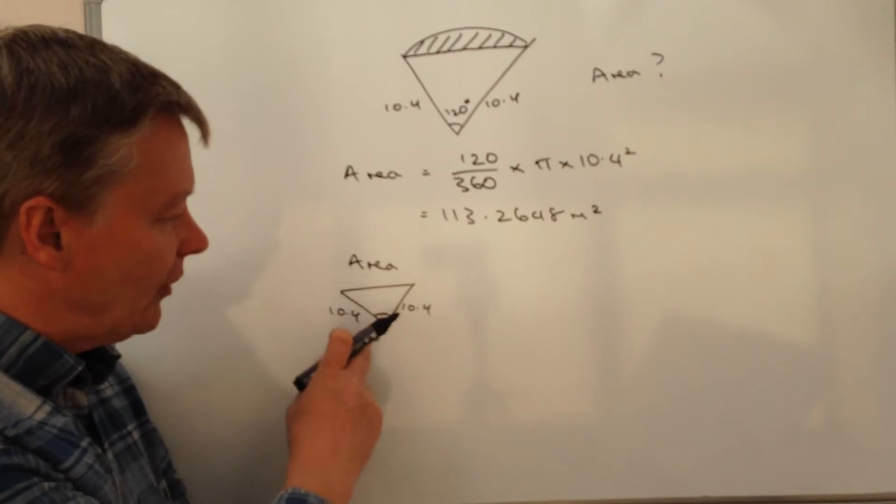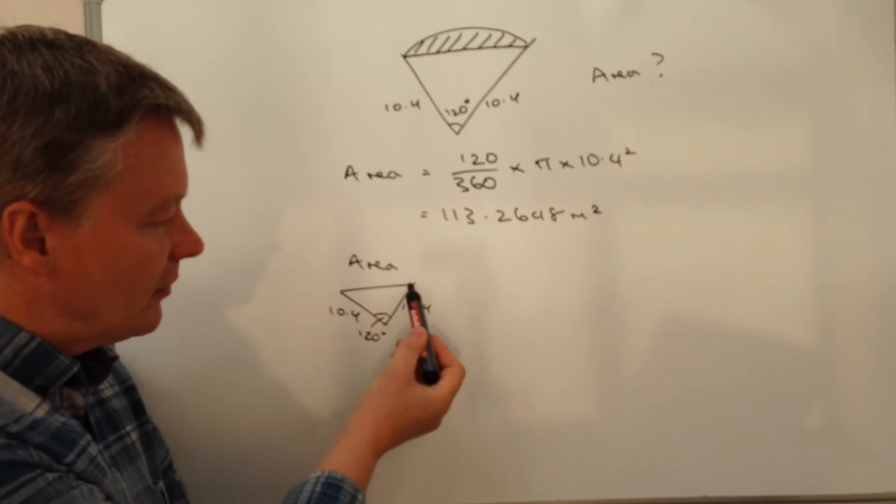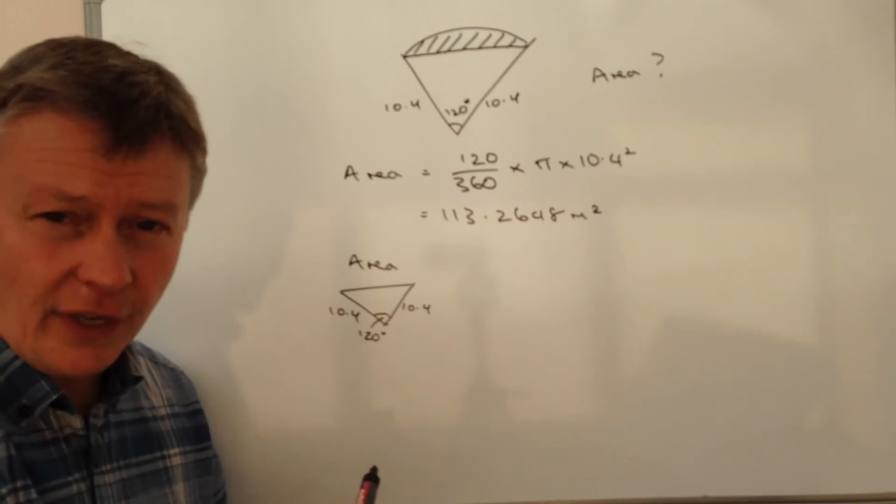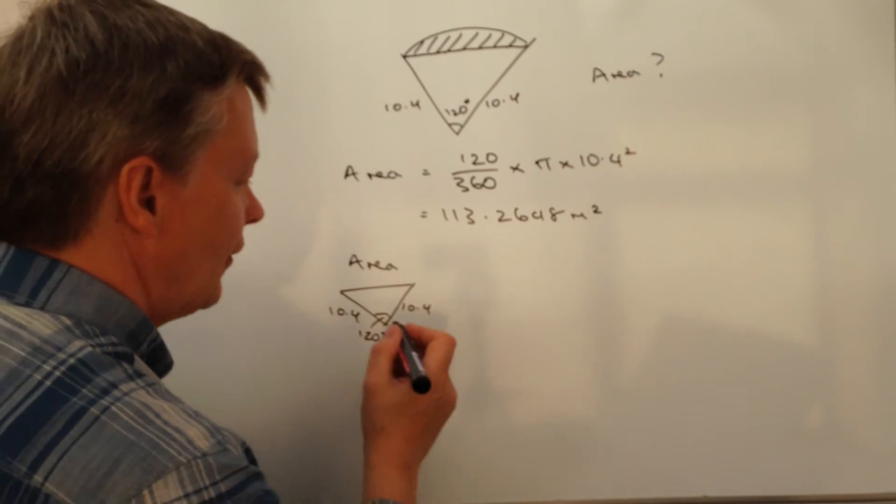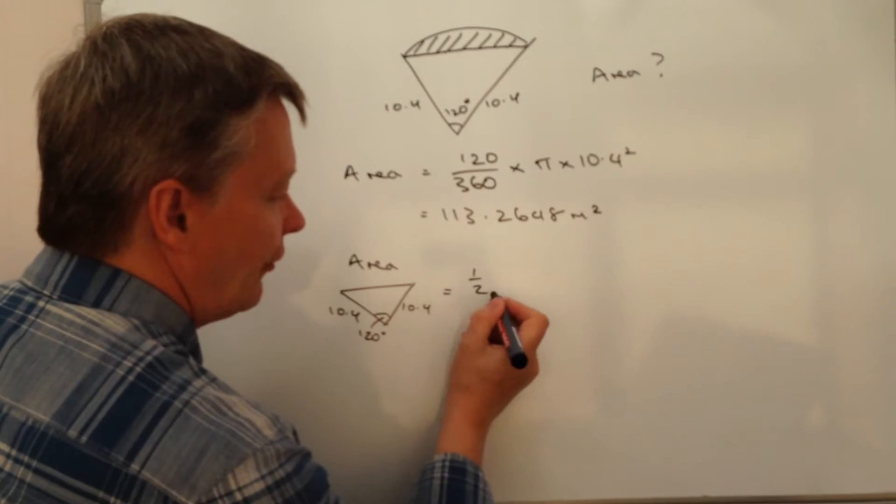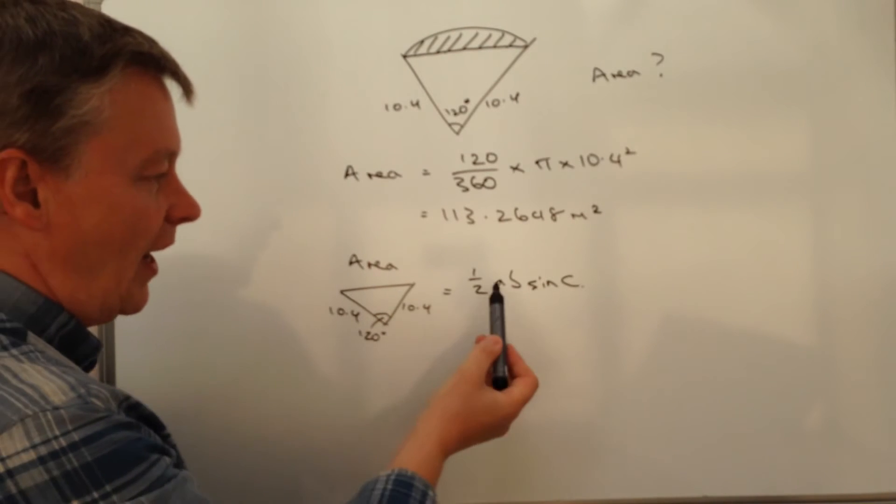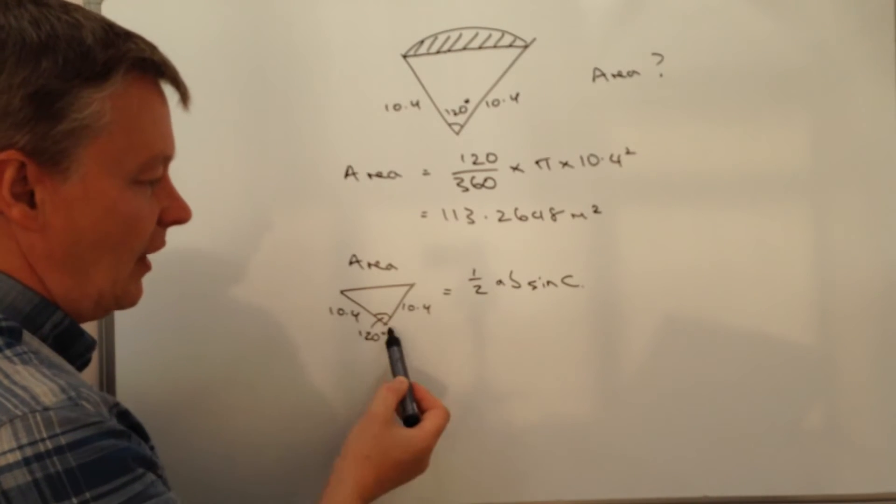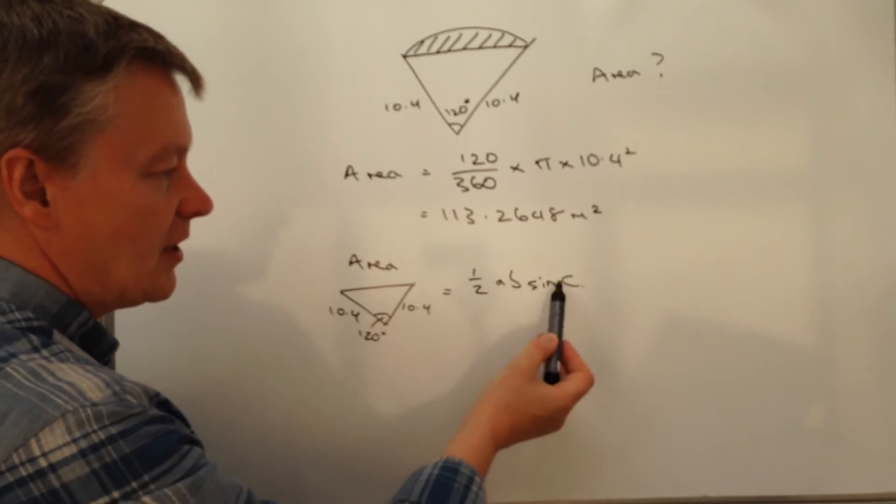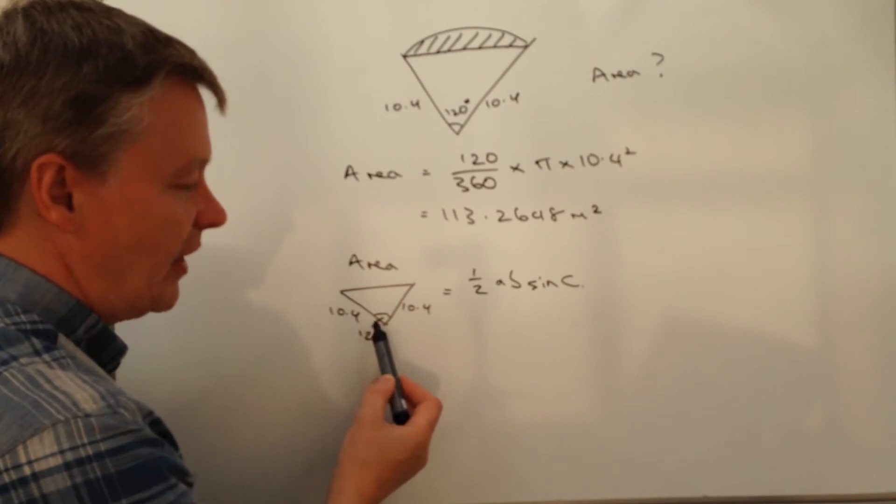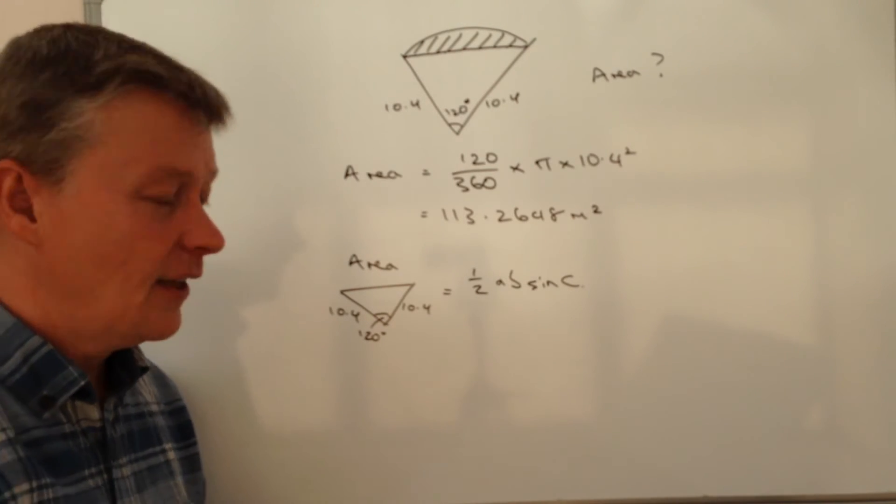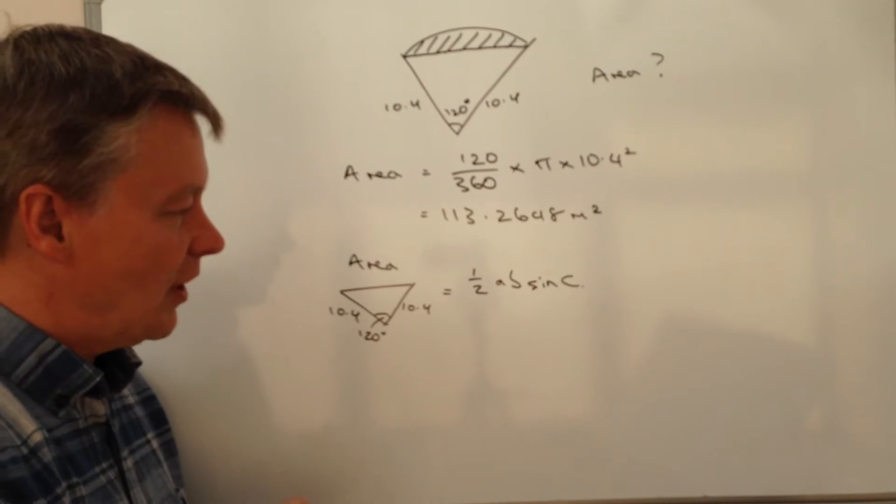Okay, so if we've got the area of a triangle, we've got now two sides and an inclusive angle. Well, the formula we use for that is a half a b sine c, where a and b are the two sides, and sine or c is going to be the angle which is included within the two sides.